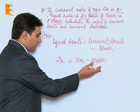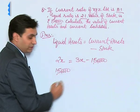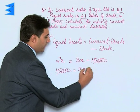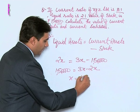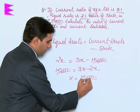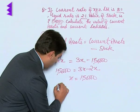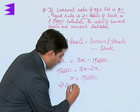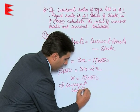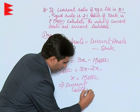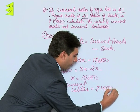Shuffling the sides: 1,50,000 becomes positive on the left-hand side. So 1,50,000 = 3X − 2X, which means X = ₹1,50,000. Since we had assumed X to be current liabilities, current liabilities = ₹1,50,000.